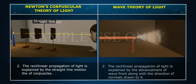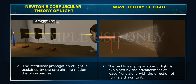The rectilinear propagation of light is explained by the advancement of wave front along with the direction of normals drawn to it.